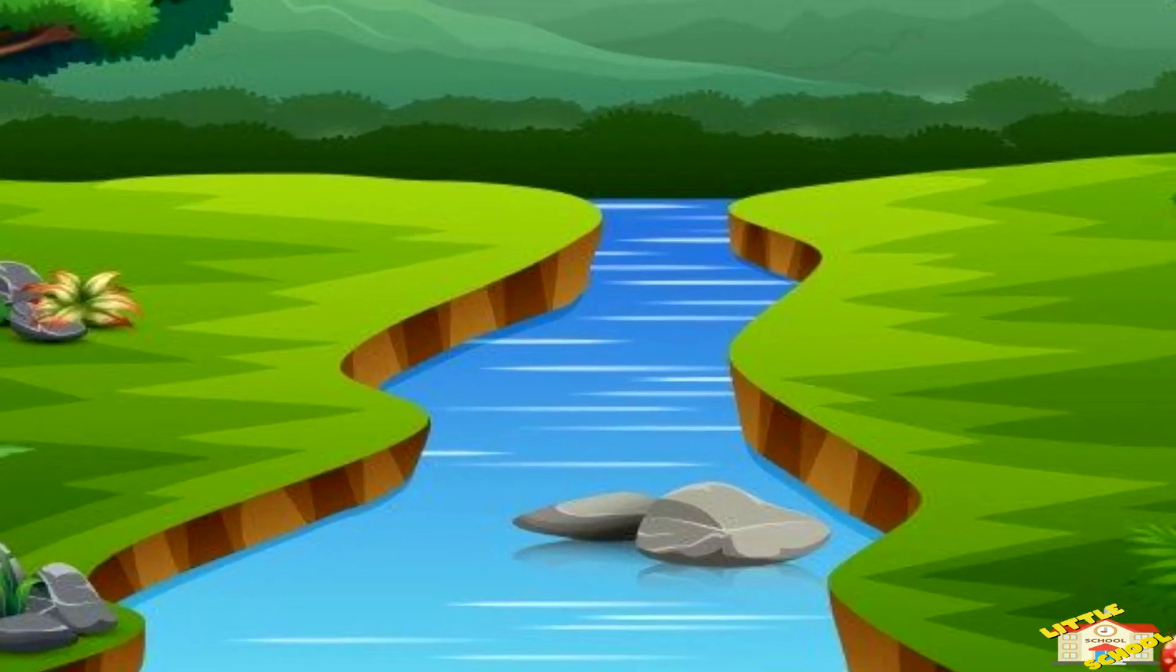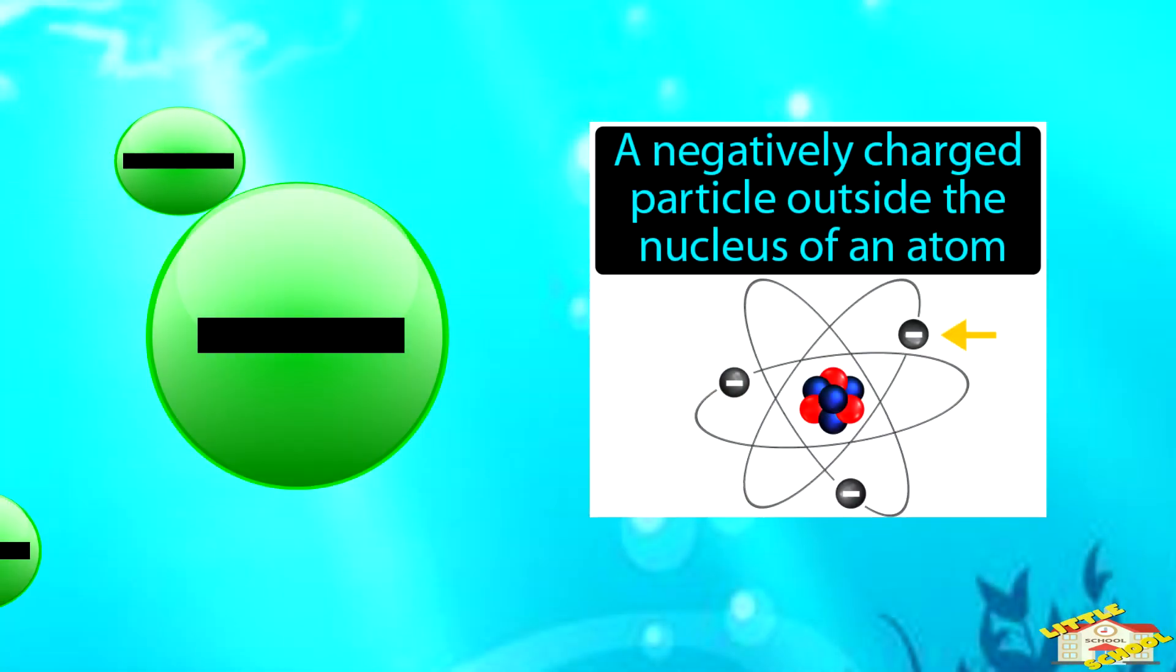Picture a river flowing with tiny invisible particles called electrons. These electrons are like little energy messengers, and they're what we call electricity.